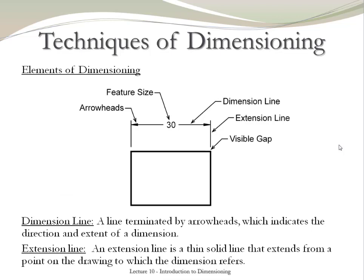Let's now talk about the elements of dimensioning. The dimension line indicates the direction and the extent of the dimension. It usually ends in an arrowhead. The extension line is a thin solid line that extends from a point of the object where the dimension is taken. Notice that there is always a visible gap between the object and the extension line.